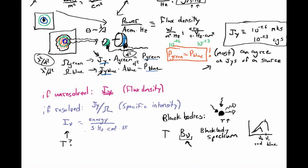At low frequencies, blackbody spectra follow the formula 2kT over lambda squared. So if we say that 2k times T_B over lambda squared equals I_nu — we'll just define that — then T_B is a brightness temperature.